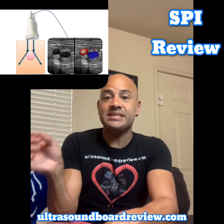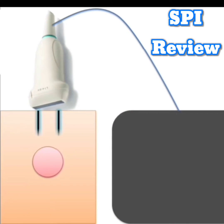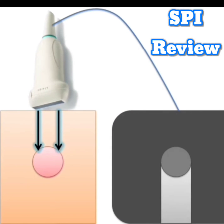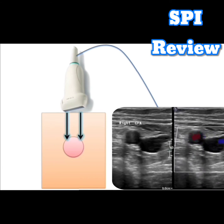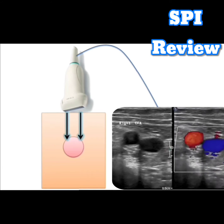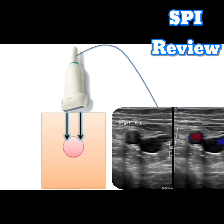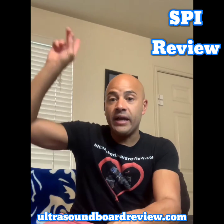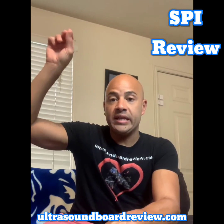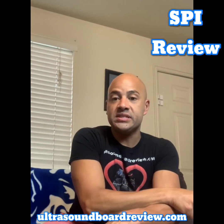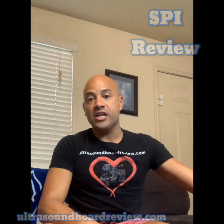So if it's a cyst, the pulse will come down at 1540 meters per second, hit the boundary of the cyst, and the pulse is going to slow down and refract. That's why you get edge shadowing — because the pulse is coming down and not going back to the transducer; it's refracting to the side and is lost forever.